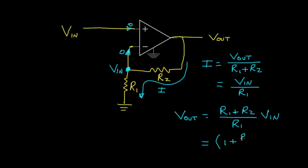Setting these two expressions equal and solving, Vout equals 1 plus R2 over R1, times Vin. So in this case we are not inverting the input voltage, but we are amplifying it. The amplification factor is 1 plus the ratio R2 to R1. If R2 is much smaller than R1 we simply follow the voltage; if R2 is significantly larger than R1 we add amplification.